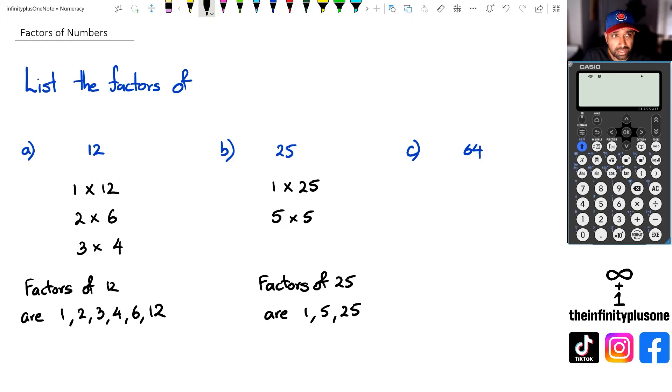So let's look at question C. We've got 64. So I'm going to go 1 times 64 because that's like the easiest one to start with. And then I've got 2 times half of 64. That's going to be 32.